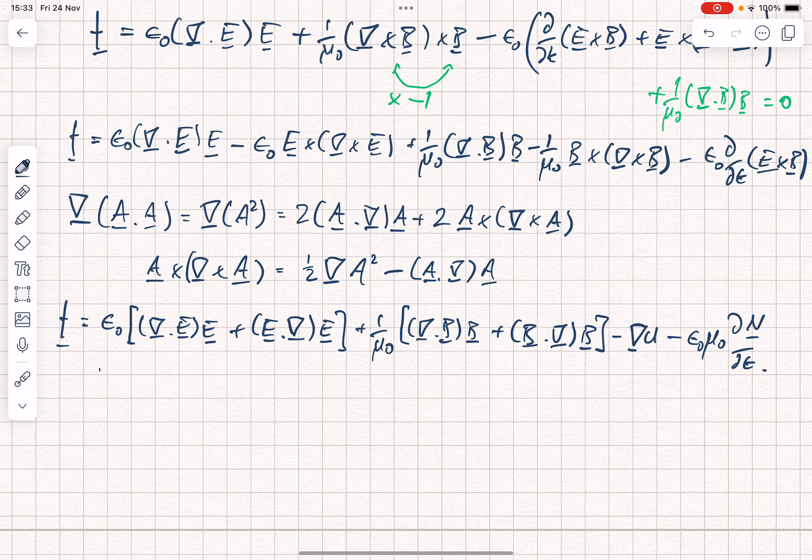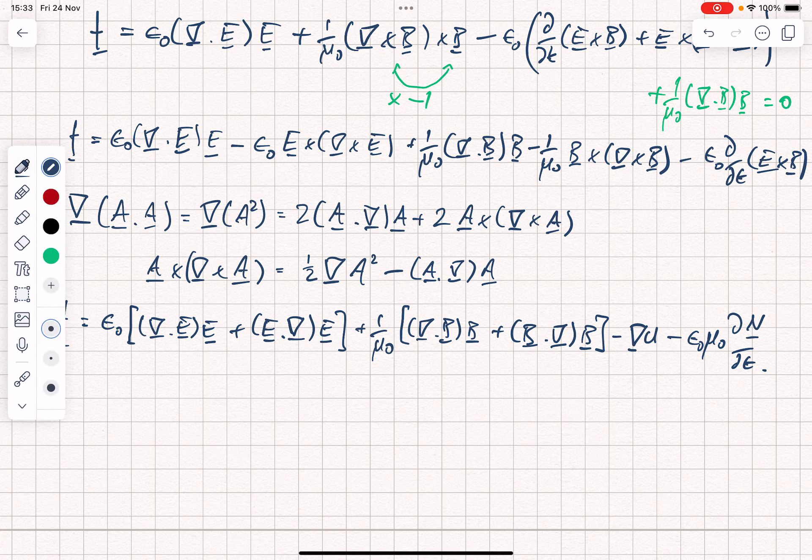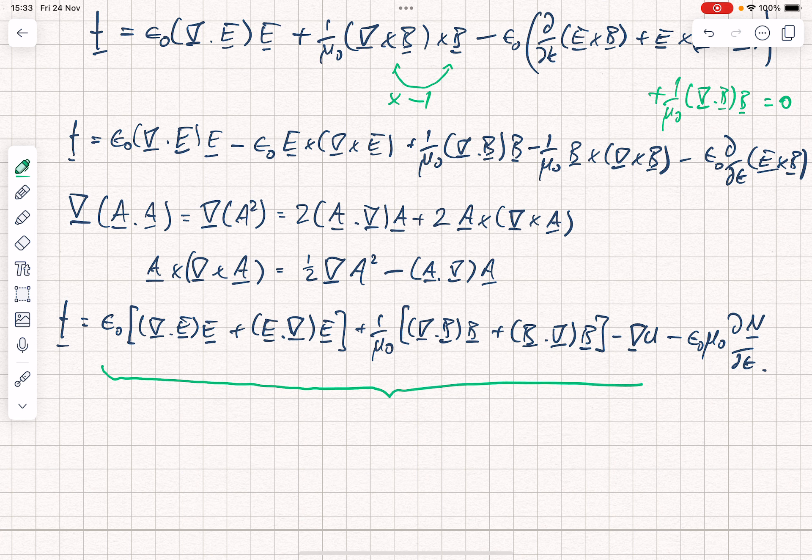And this entire chunk of maths can be written as the divergence of a tensor, which of course is the Maxwell stress tensor. And we define the divergence of a tensor, so the jth component is just the sum over i of the i-th component of grad, acting on tij.